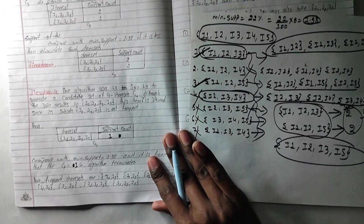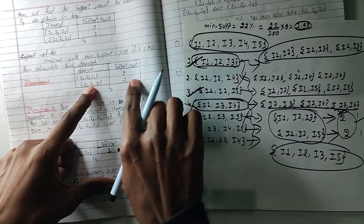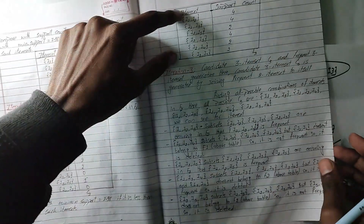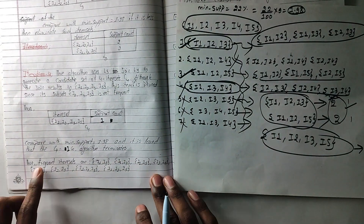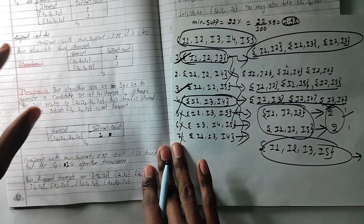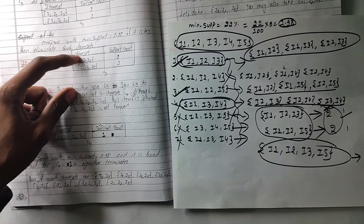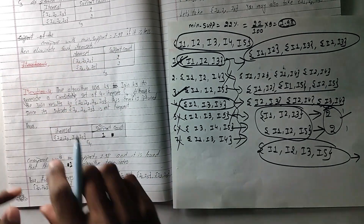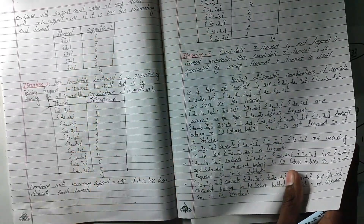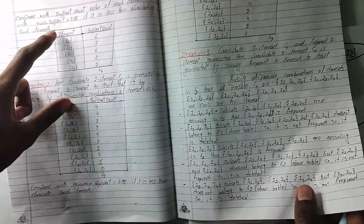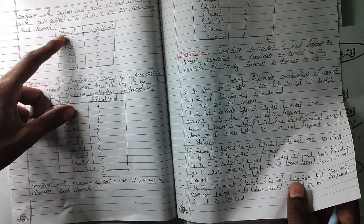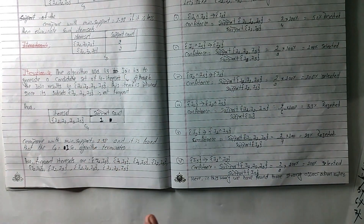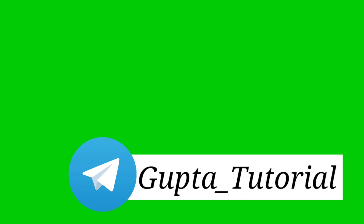So the final answer is that the last table is the last table. The frequent item set is the same — the last table is the minimum value compared. This table will be the last table. So the first table will be the single table. We can use the frequent item set.